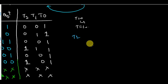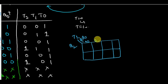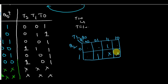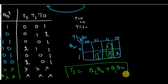Now draw the K-map equations for T2, T1, and T0. For T2, the inputs are Q2, Q1, Q0. Plotting the values in the K-map and utilizing the don't cares to minimize the expression, I use two pairs. The expression for T2 is: T2 = Q2·Q0 + Q1·Q0.